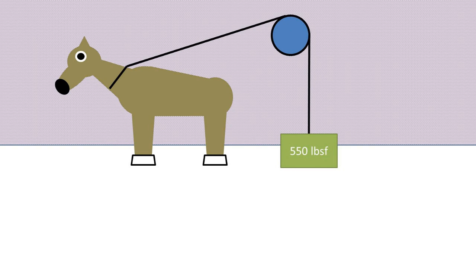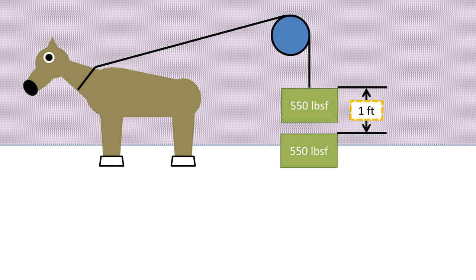On the other side of that pulley, the cable is attached to a 550 pound force weight. The horse moves this 550 pound force object one foot over a time period of one second.